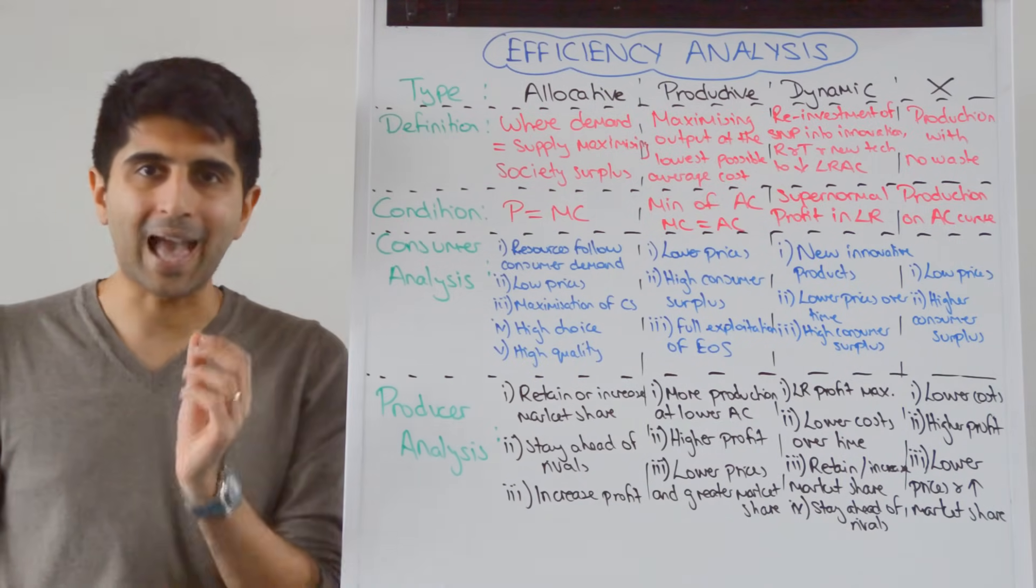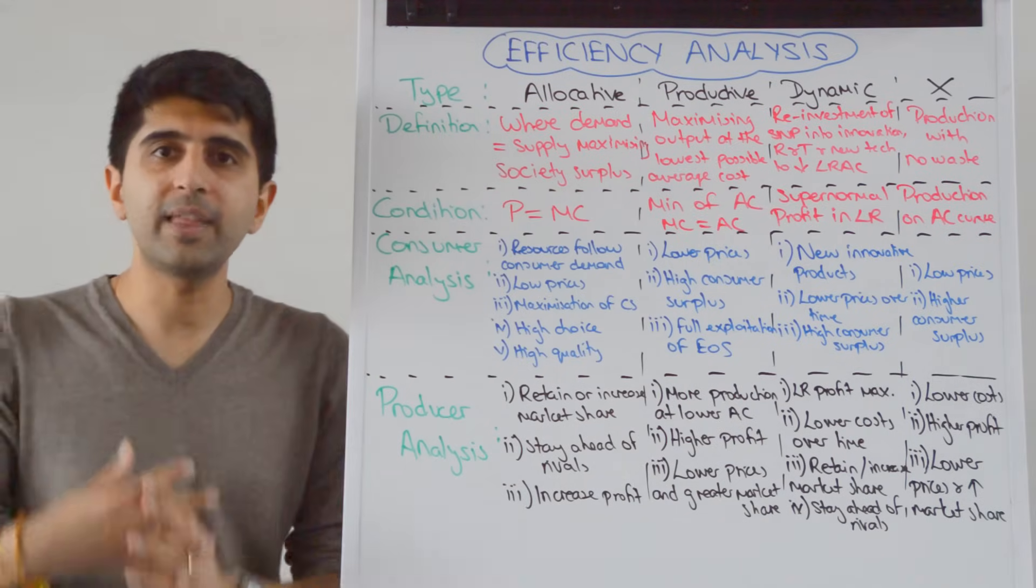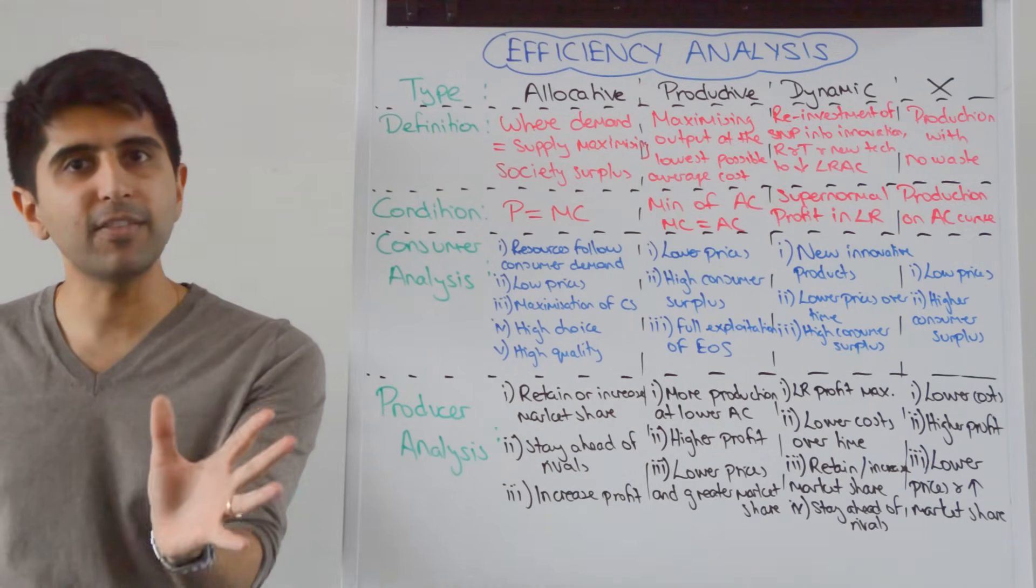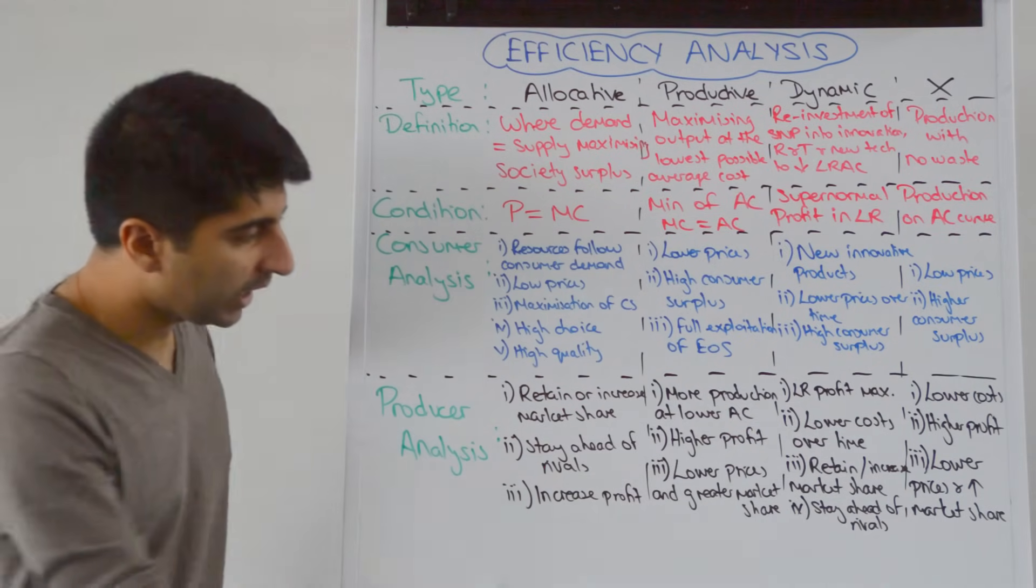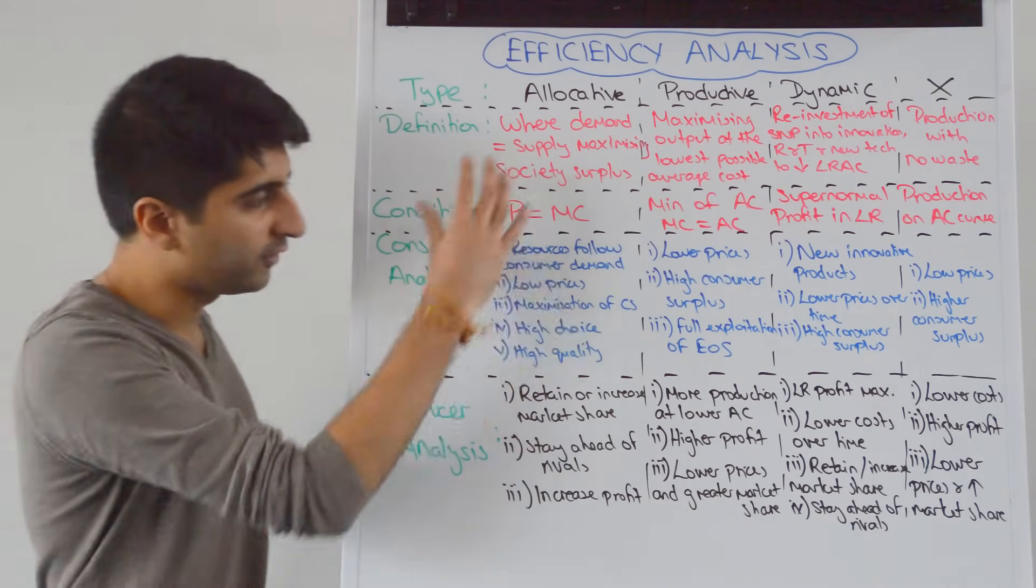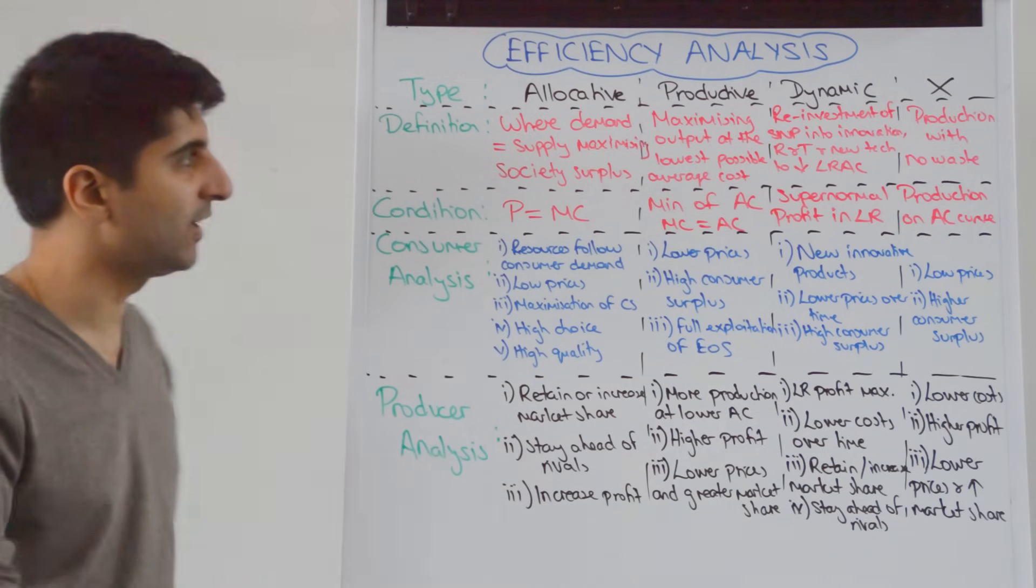For the producer, why is it good for them to be allocatively efficient? Because it's a way for them to retain their market share or to increase their market share and to stay ahead of their rivals who maybe aren't doing all of these things perfectly. It also means that they can increase their profit by bringing more consumers to them as a result of doing all of these things. So producers can like being allocatively efficient.